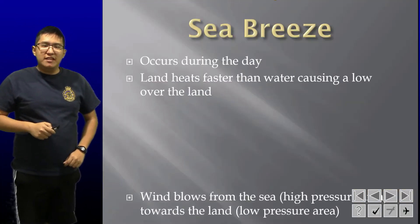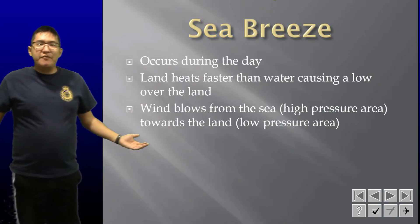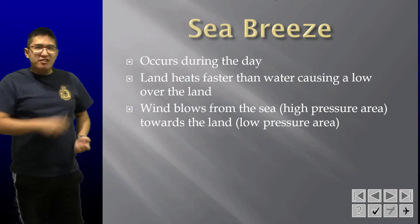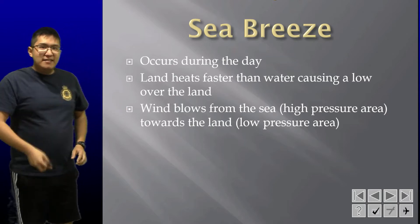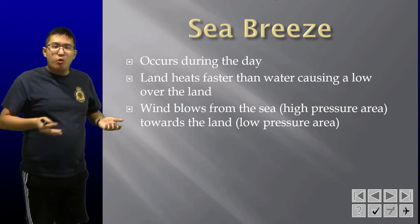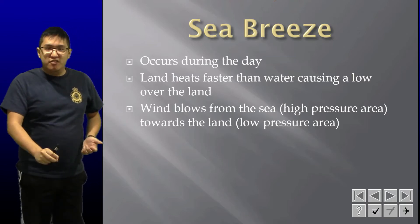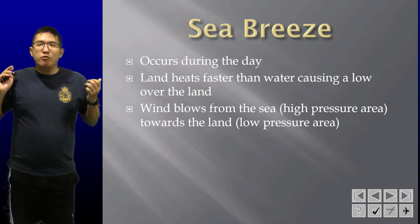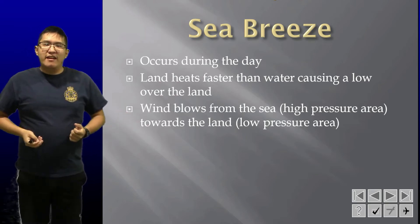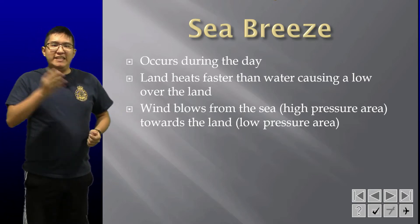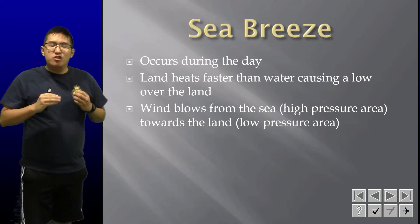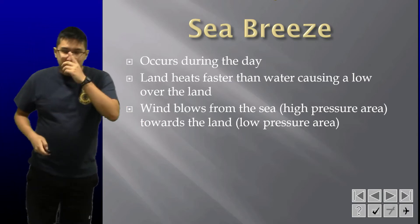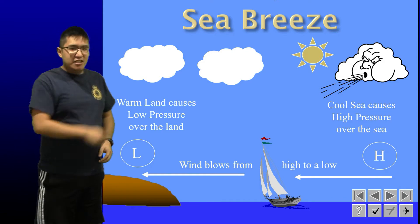Next we have a sea breeze — this is the opposite. If you've ever been to a lake or the actual ocean, you may have experienced this, because it occurs in the day. The land is heating up faster than the water, which will cause a low pressure system over the land. Air goes from high pressure to low pressure, so it will go from the sea to the land — hence the sea breeze. The 'sea' part tells you the direction from where the wind is coming from, not where it's going.